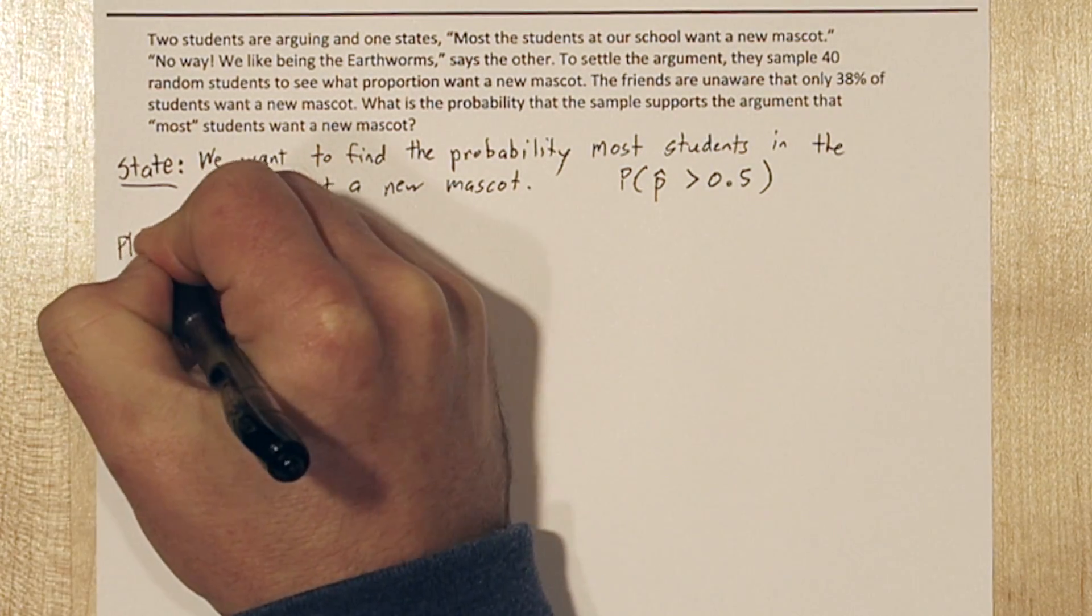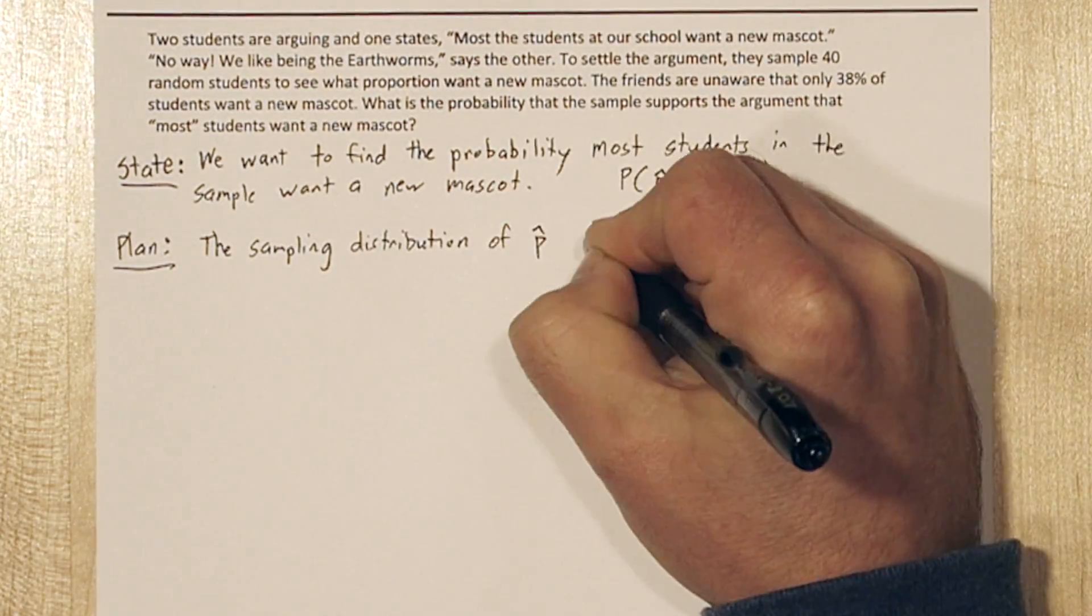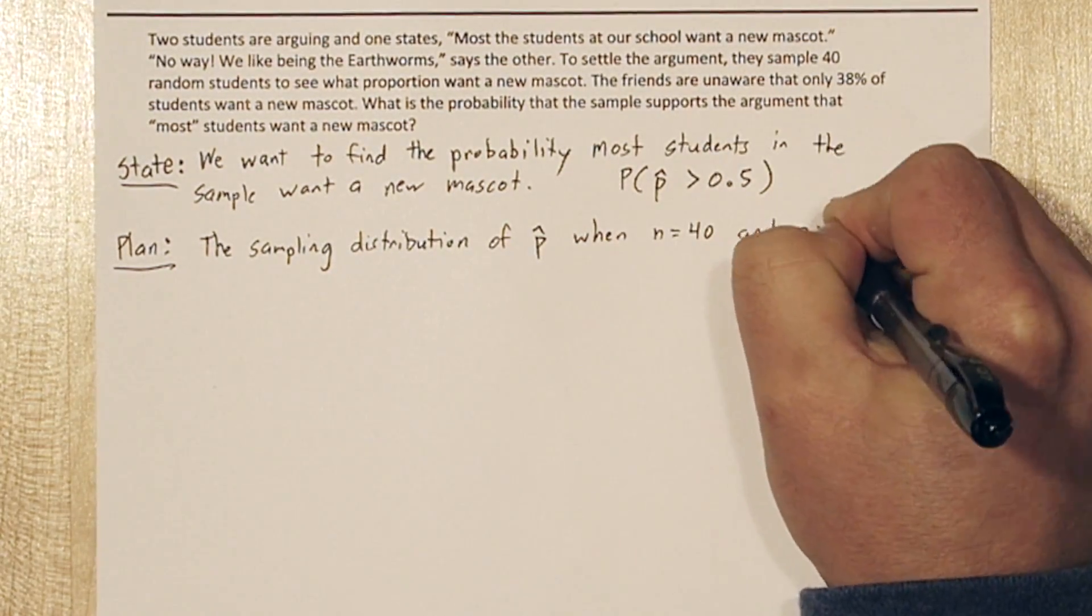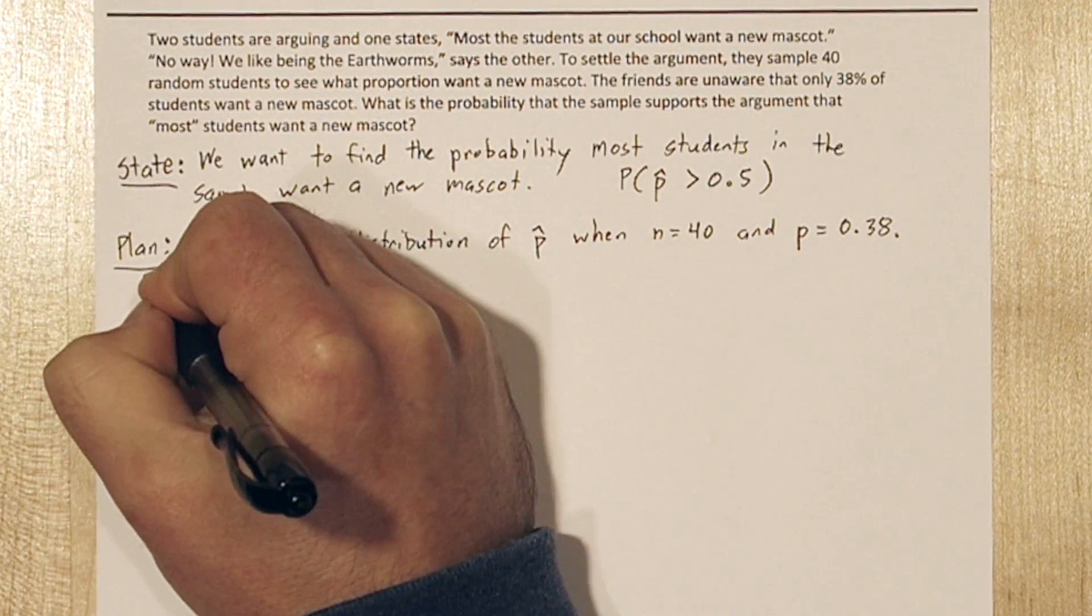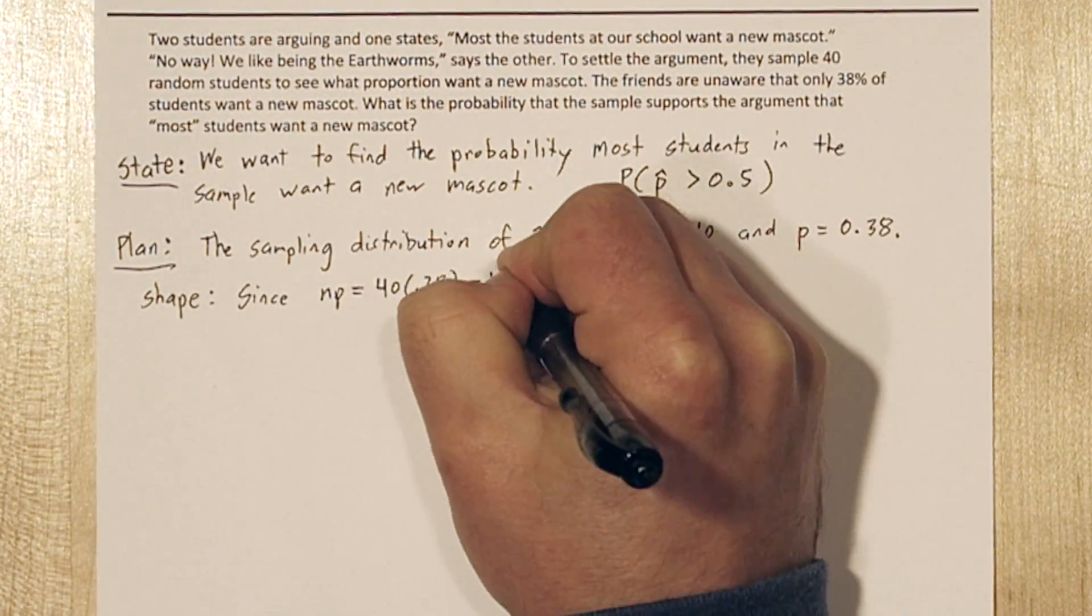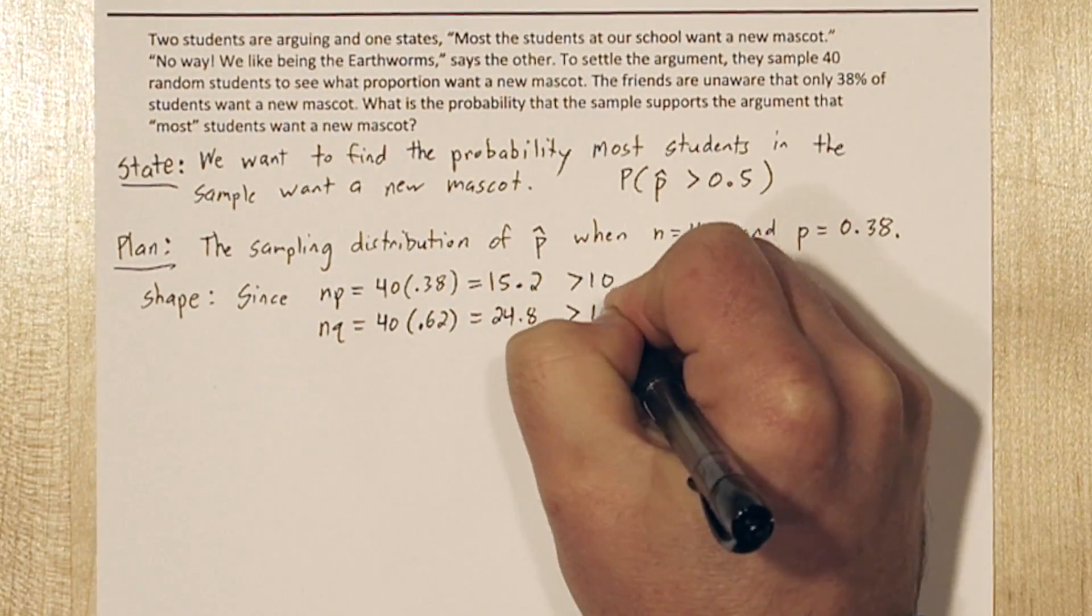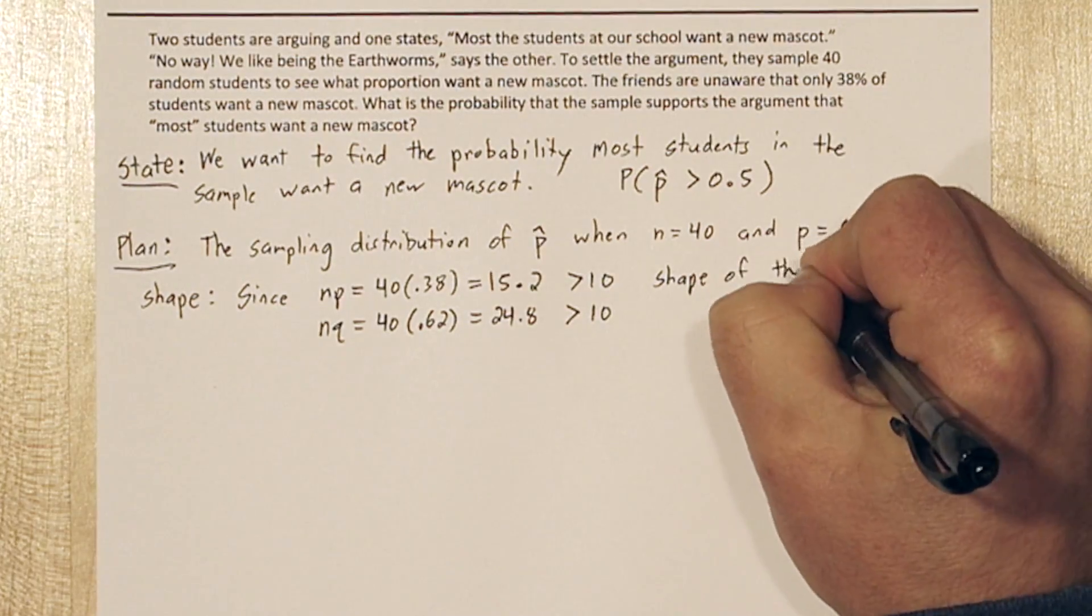Now we need a plan. The sampling distribution of p-hat when the sample size is 40 and the true parameter is 0.38 has some specific characteristics. First, we know the shape of this distribution is approximately normal. This is because n times p is 10 and n times q, which is the complement of p, is also 10.